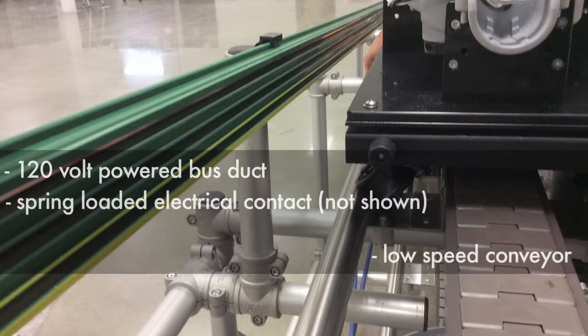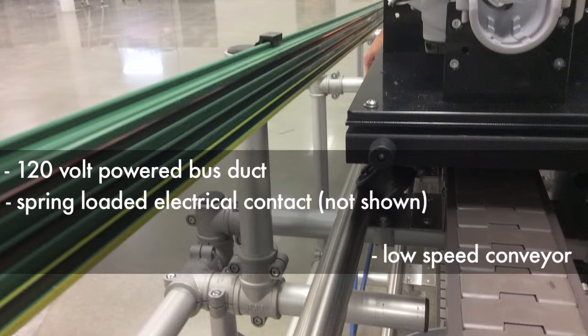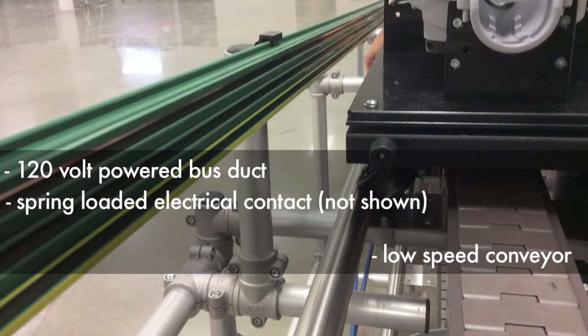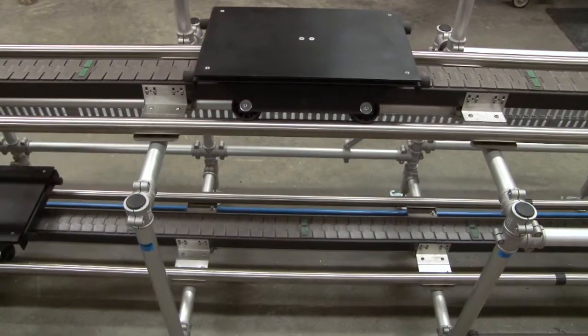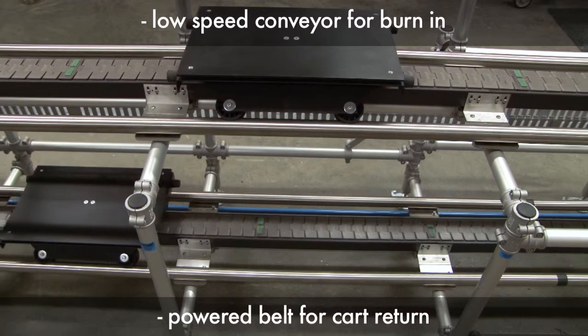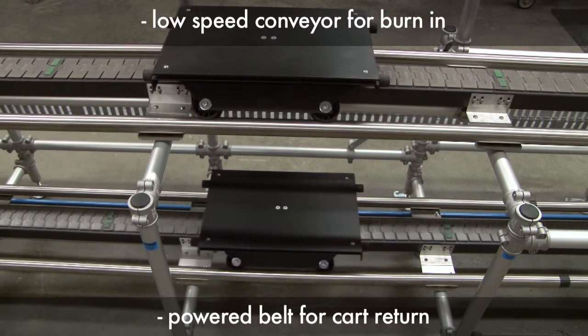The completed units would be propelled on fixtured carts with spring-loaded contacts connecting to a powered 120-volt duct. The product would move at an incremental, slow speed to achieve the automated lengthy burn-in time.